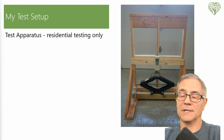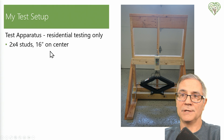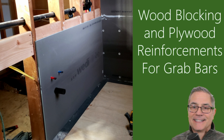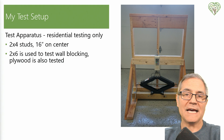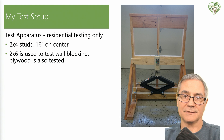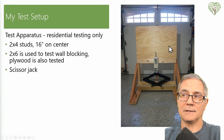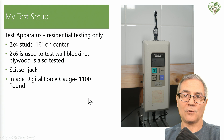So this was my new setup, and I did only residential. I used two-by-four studs, 16 inches on center, which is standard building code in the U.S. I also used two-by-sixes up here as wall blocking — I highly recommend you watch my previous video on wall blocking, because that is by far the best way to attach a grab bar: to the wood stud and preferably to blocking, since you have more than an inch and a half width to connect to. We also tested on plywood, which is another blocking method. Down below we have a scissor jack, and this is my Amada digital force gauge — a 1,100-pound push-pull force gauge that allows us to quantify the results.